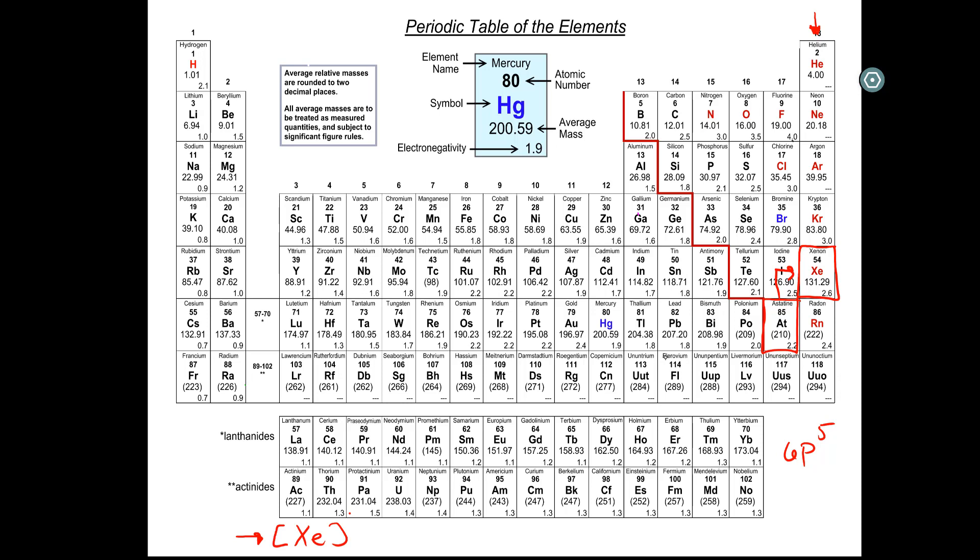So from here, we can continue like we're reading our book. So we start with xenon, we move down to 6S. So from here, we have 6S2. Remember, we now move down to our 4F, 14, 5D10 and we finish up with 6P5.